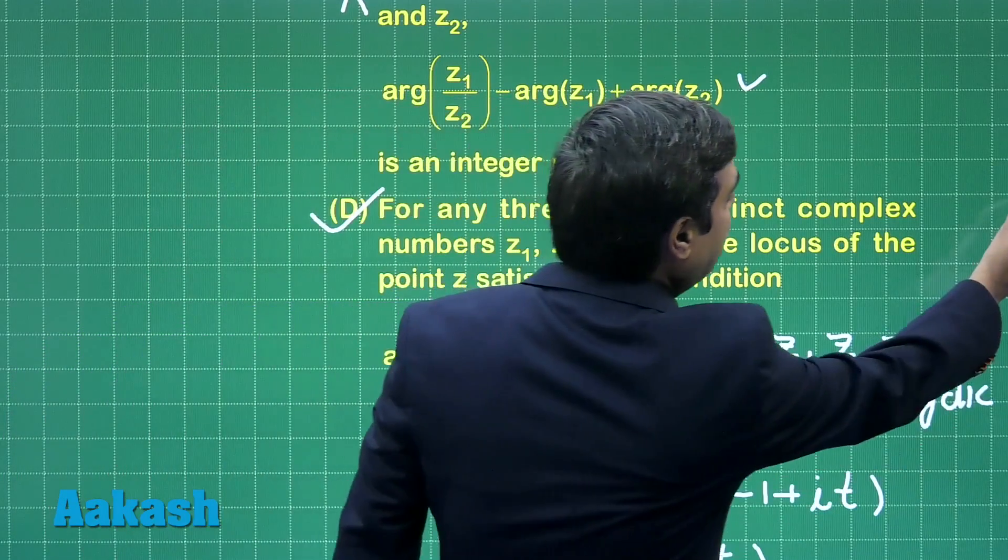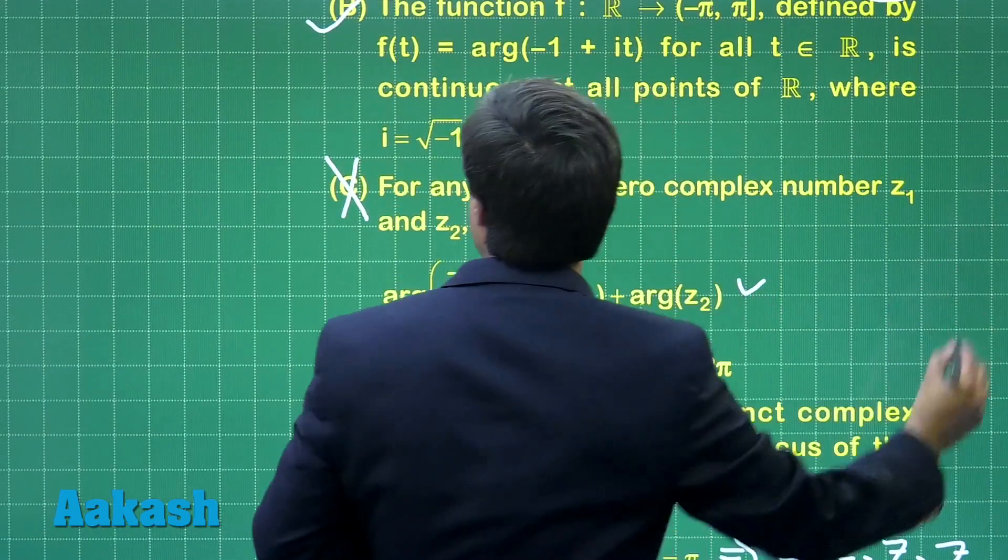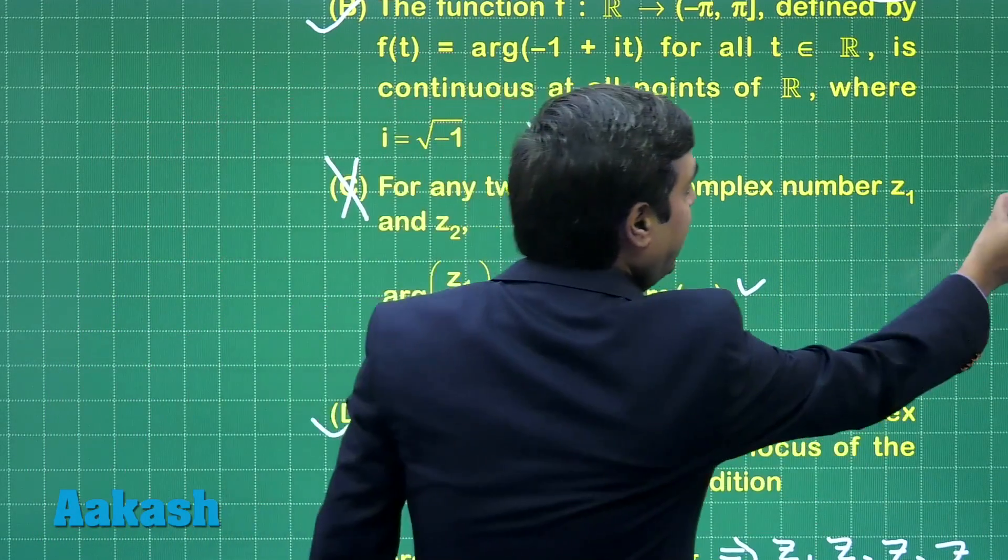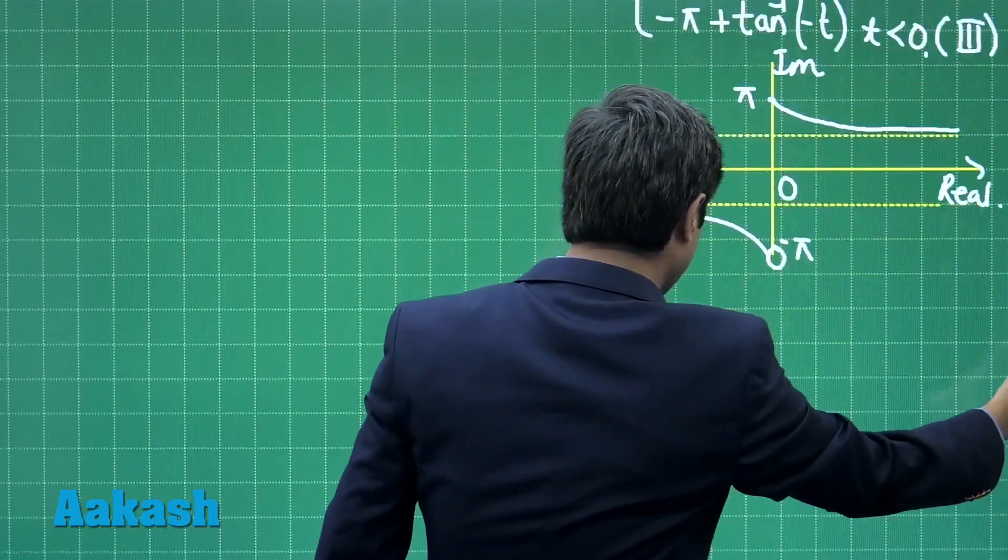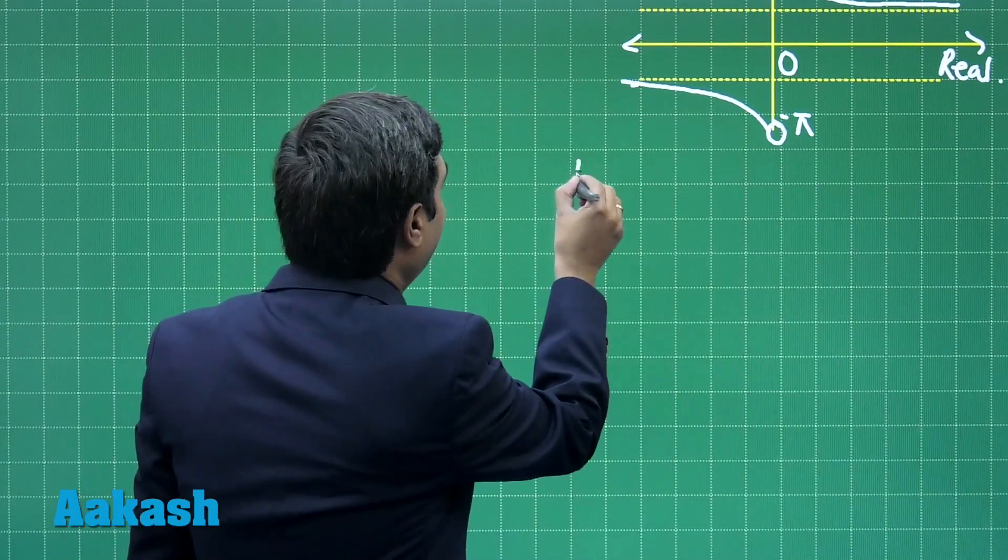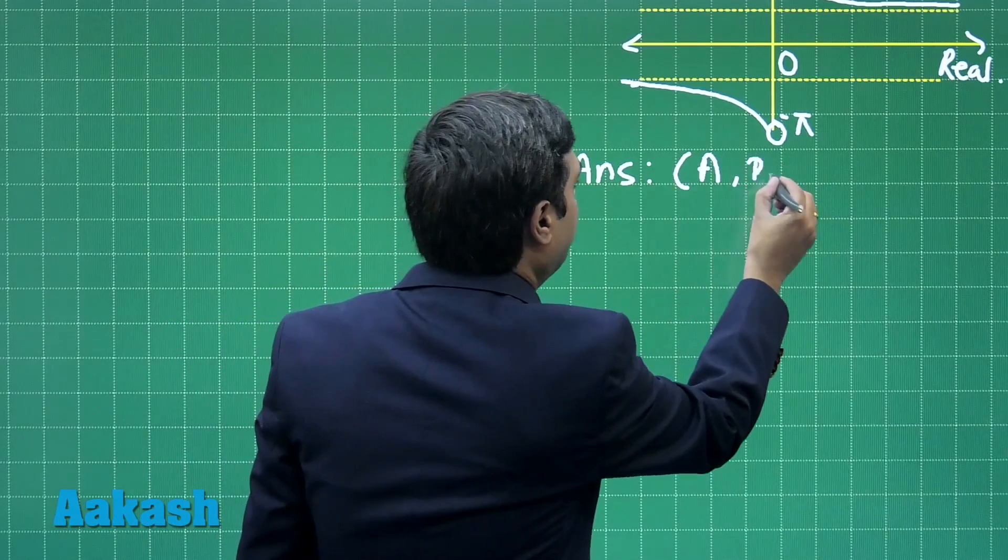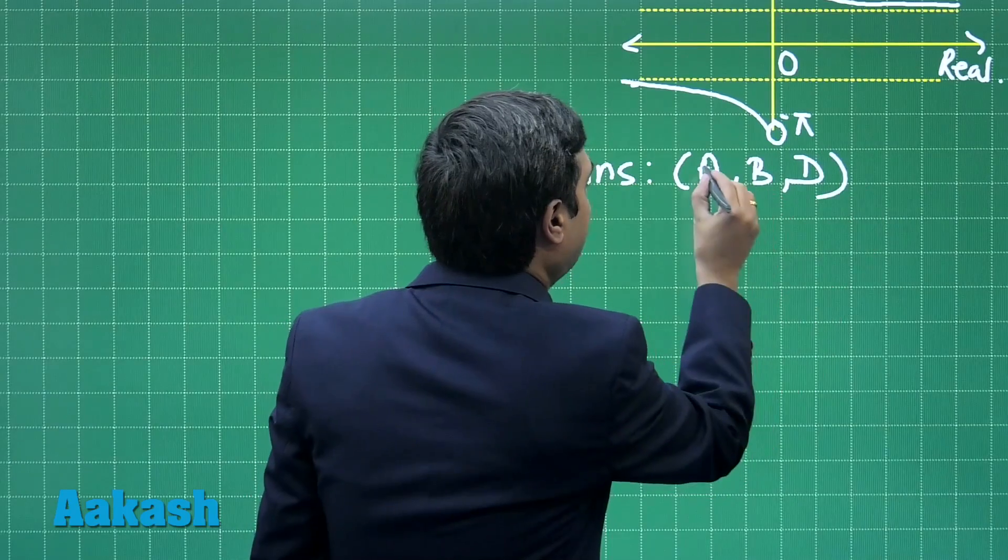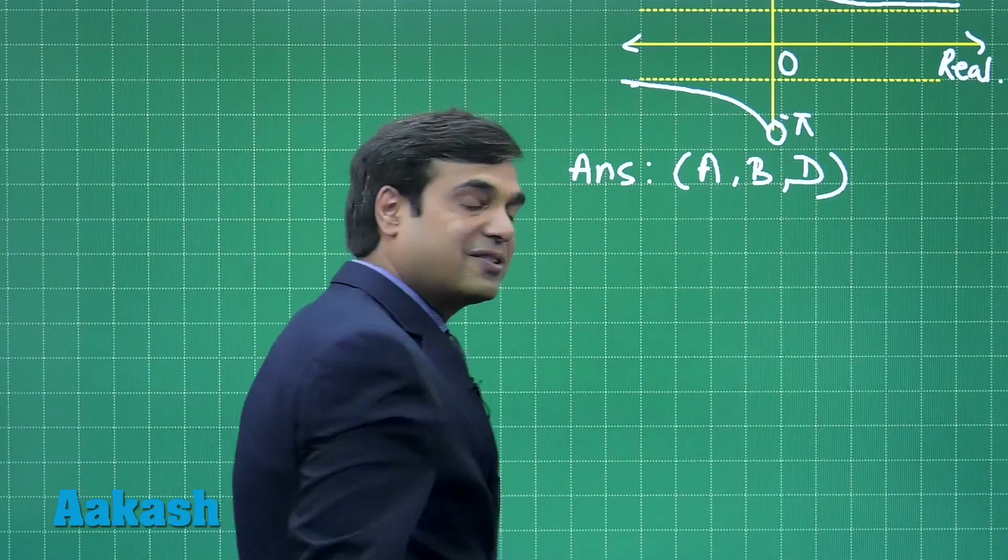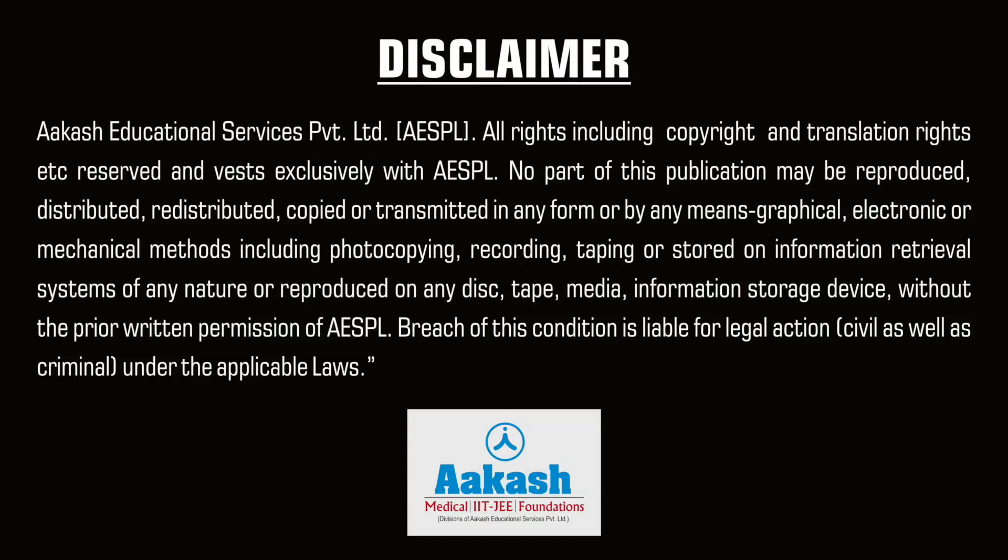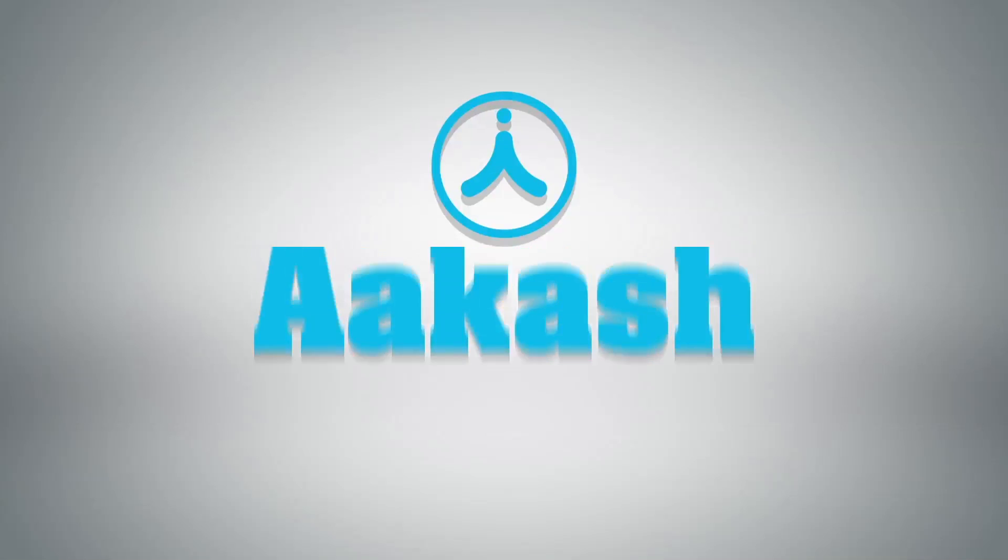Clearly we can see from our given options that option A, B, and D are correct. Marking the correct answer as options A, B, and D. This is clear. Now, moving to question number 2. Well, thank you.